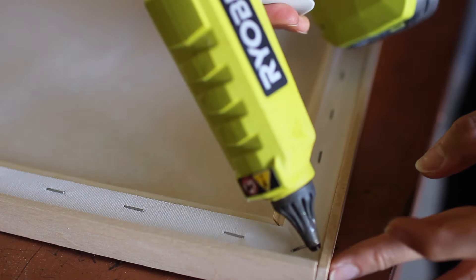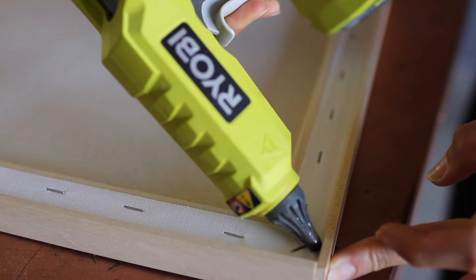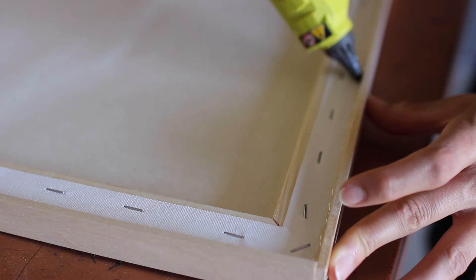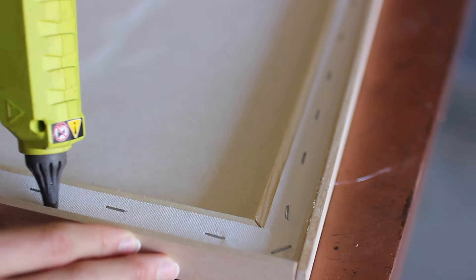Once I glued those all to the sides I flipped the canvas upside down and then I essentially just caulked the side with hot glue to ensure that those wood pieces were going to stick.